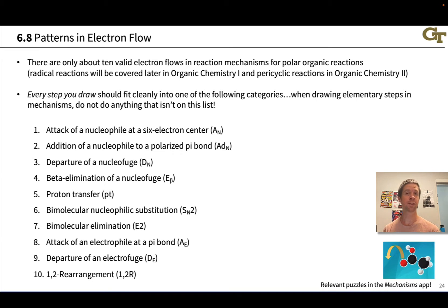And when it comes to reactions with ionic intermediates, there are only about 10 valid electron flows that appear in organic reaction mechanisms. All the mechanisms you learn throughout organic chemistry 1 and 2 will be built from these elementary steps, and when you're drawing mechanisms it's very important that every step you draw needs to fit into one of these roughly 10 boxes. Don't do anything that is not on this list; it's almost certainly not correct.